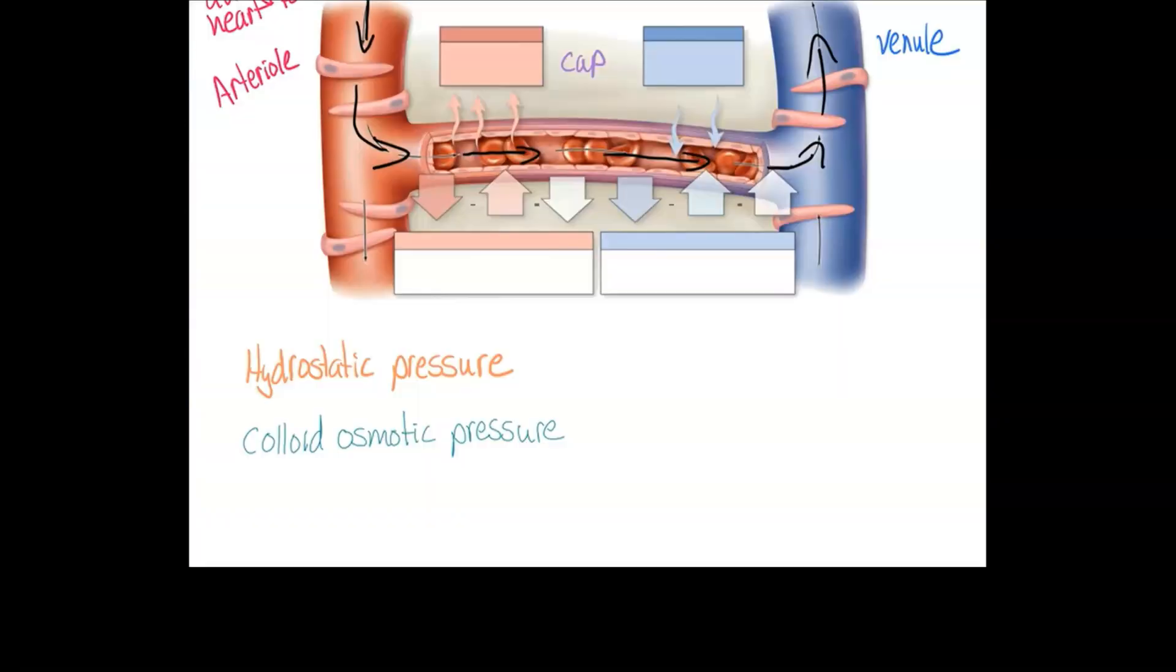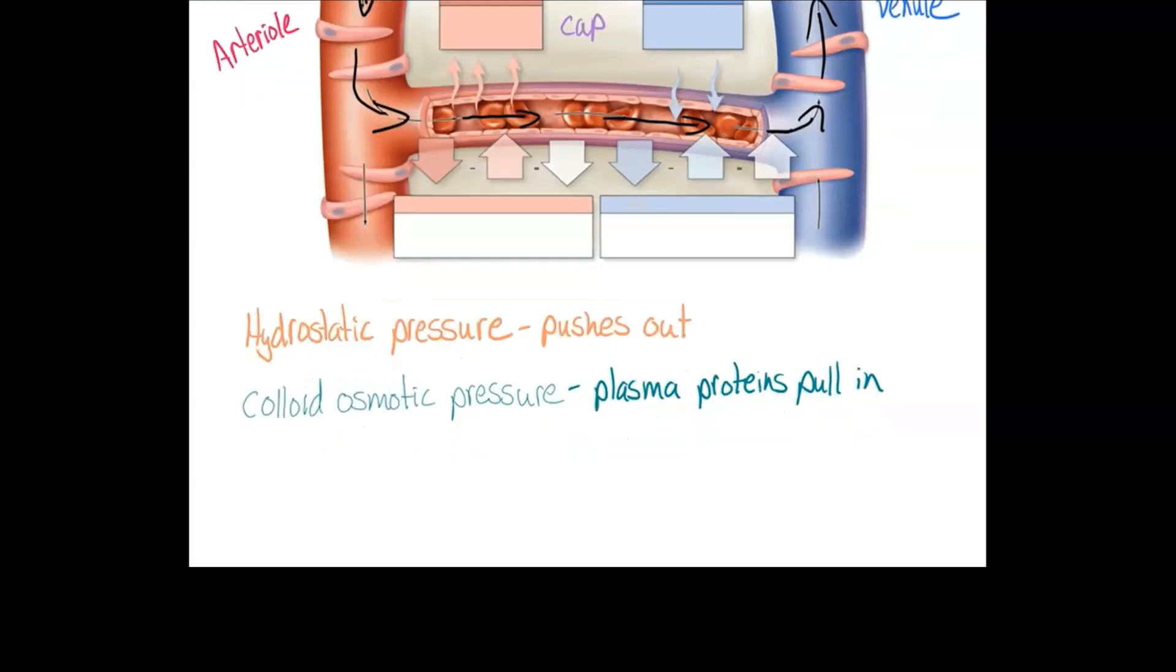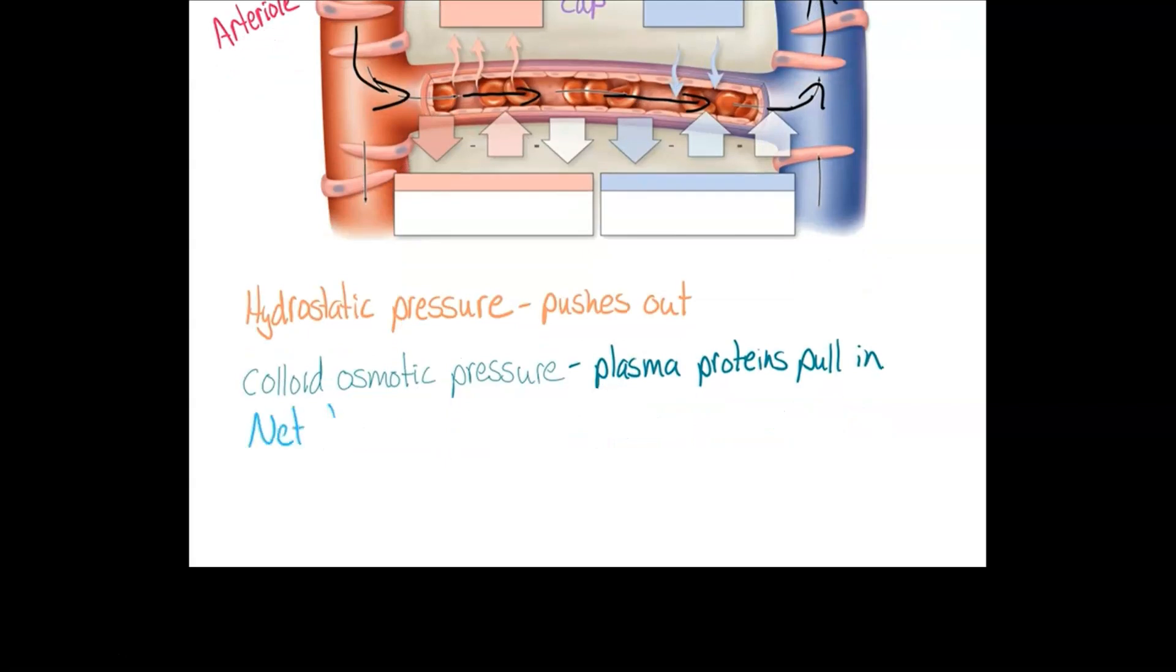So now you know what these pressures are. Hydrostatic pressure pushes out. Colloid osmotic pressure is your plasma proteins pulling in. These two forces work against each other. So the third force that we're going to have is net filtration pressure. This is the sum of the two opposing forces.